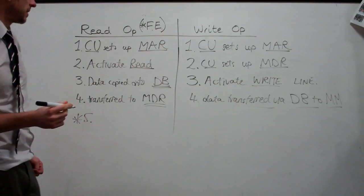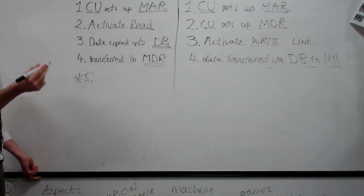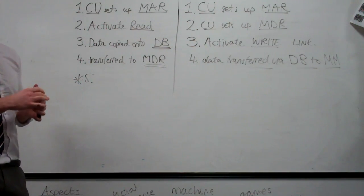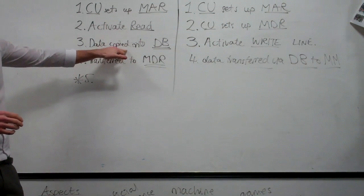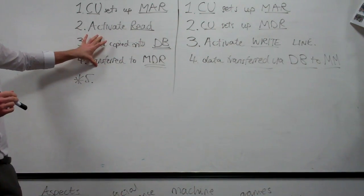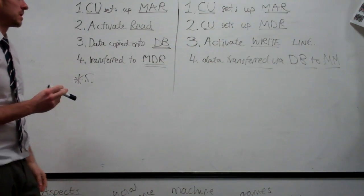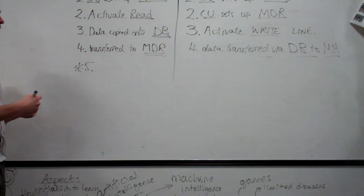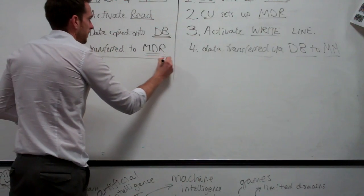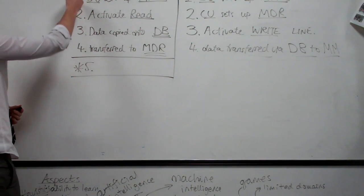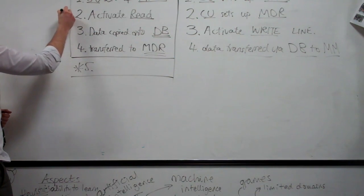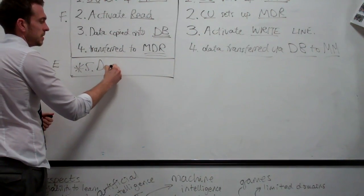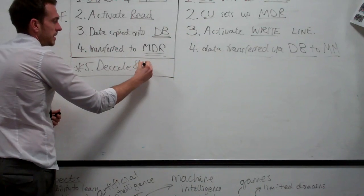So both operations get four steps. Don't get mixed up in the exam — they might condense them. Just make sure you get across those four individual parts. What is the extra step if it's fetch-execute? Decode or execute. Because this is the fetch part, and then it needs to be decoded and then executed.